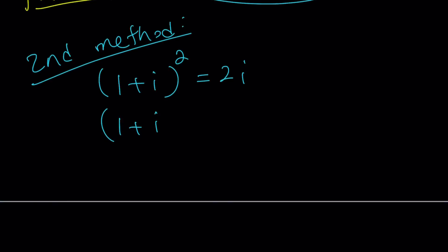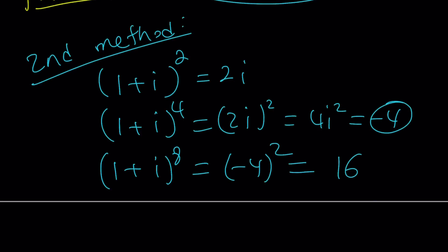I'm going to square this expression. That's 2i. So I'm going to raise it to the fourth power, which means square both sides. That's going to be 4i squared, which means negative 4. Let's raise this to the eighth power, which means raise this to the second power. That's going to give us 16.